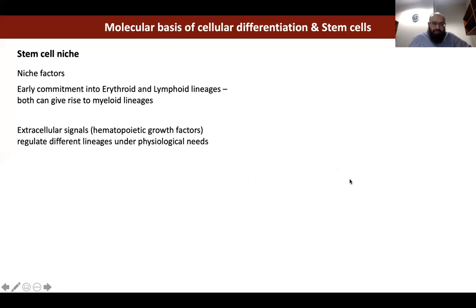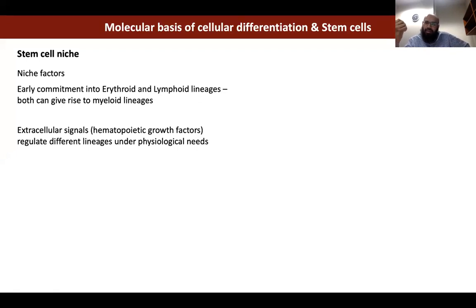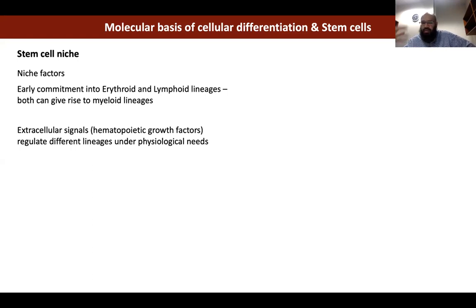The stem cell niche in bone marrow is provided by bone marrow stromal cells — connective tissue cells like fibroblasts — plus the extracellular matrix bound by the stem cells. Molecular factors such as bone morphogenetic proteins and Wnt/beta-catenin signaling keep stem cells as stem cells by preventing them from differentiating. When a cell decides to differentiate, it needs to come out of the niche.